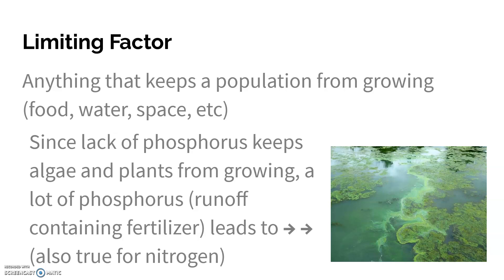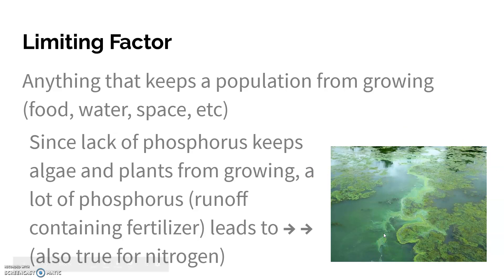What happens is these nitrates and phosphates cause algae and phytoplankton to grow and grow and grow, which is an issue in itself because you get this big blanket of green algae. But the big issue is when they die — they become decomposed by aerobic bacteria.